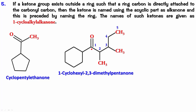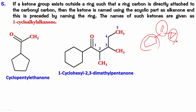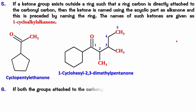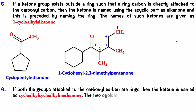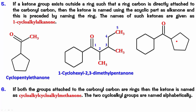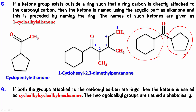What happens if both groups attached to the carbonyl are rings? Since there is only one carbon atom in the ketone, it's methanone. These are cycloalkyls, so we say cycloalkyl cycloalkylmethanone, with both cycloalkyl groups named alphabetically. So for this example with a cyclohexyl and a cyclopentyl group, it's cyclohexyl cyclopentyl methanone.